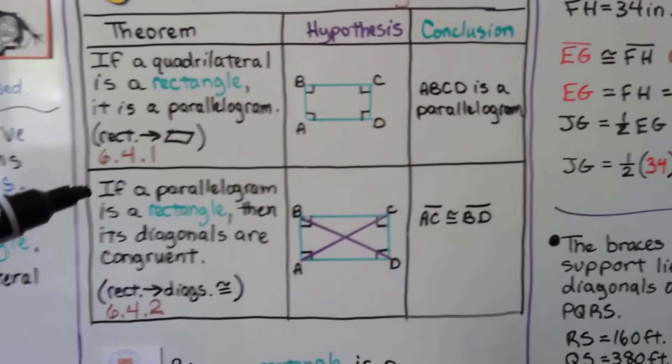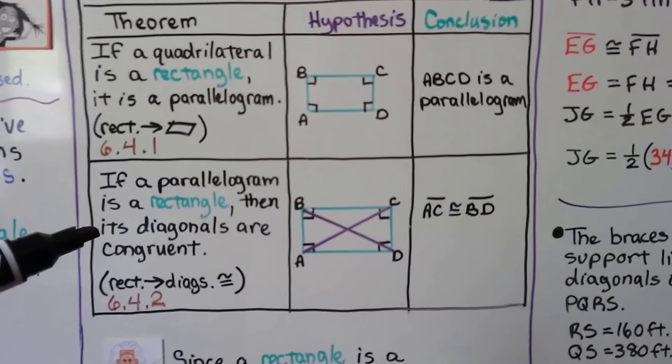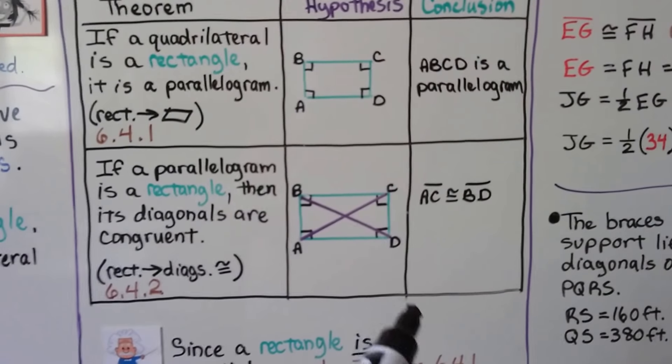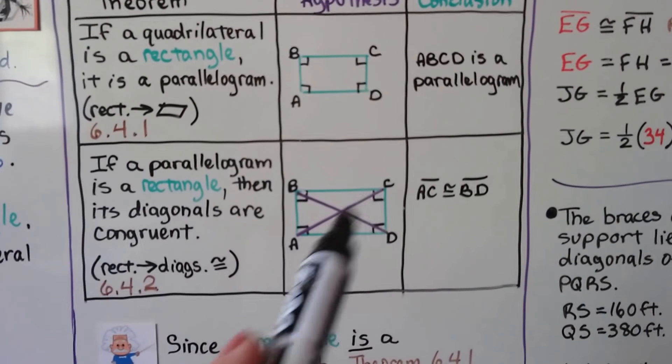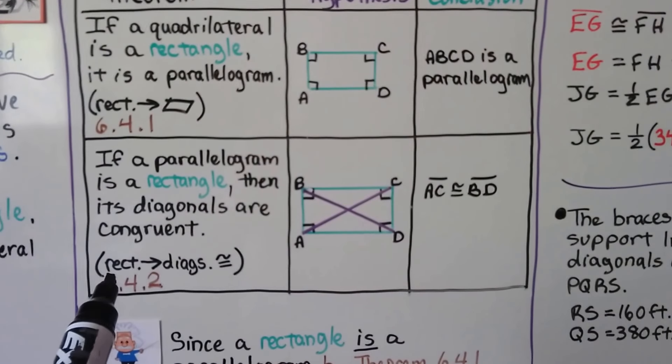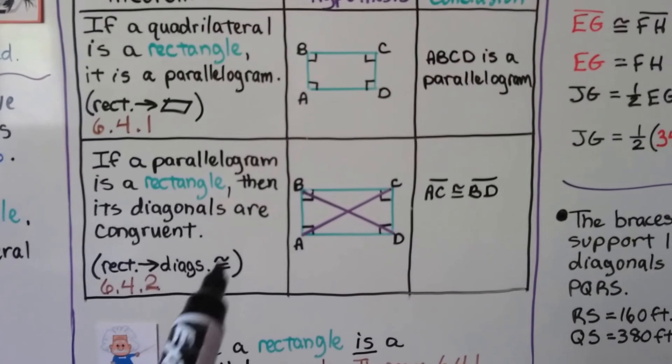Our second one says if a parallelogram is a rectangle, then its diagonals are congruent. So here we have a rectangle with some diagonals. So we know AC is congruent to BD. We can write in geometric notation, rectangles, therefore diagonals congruent.